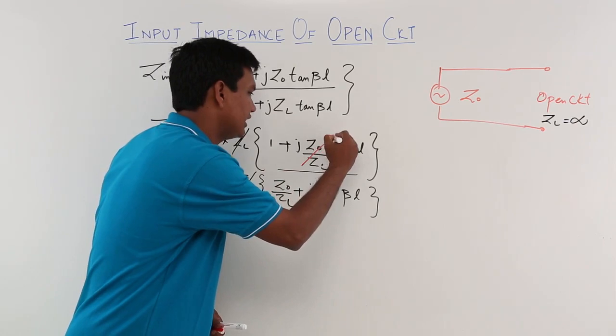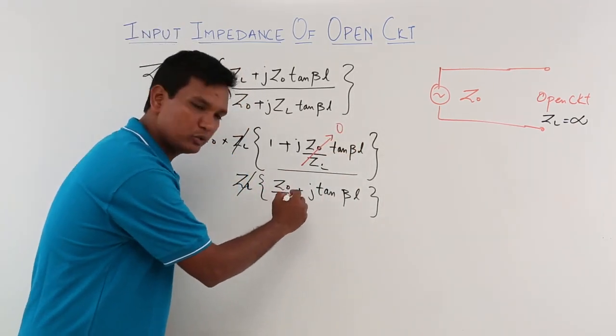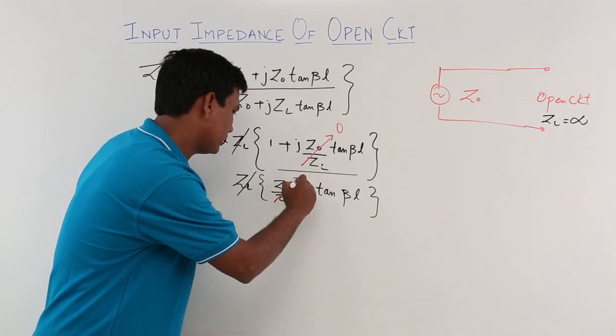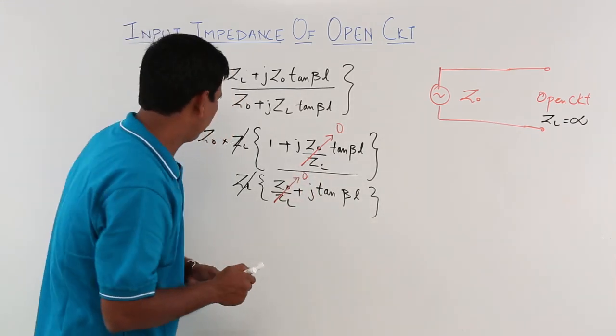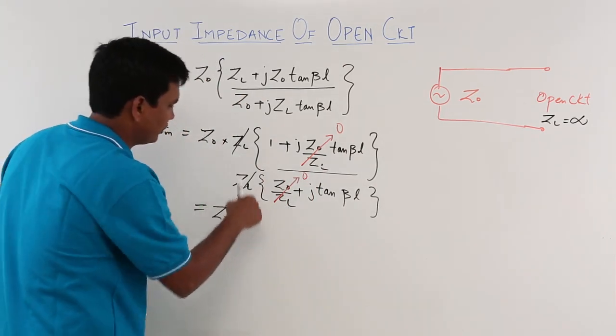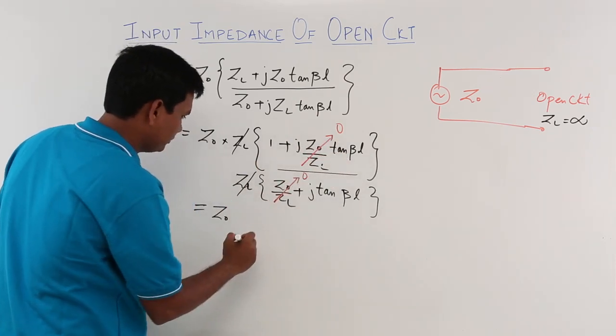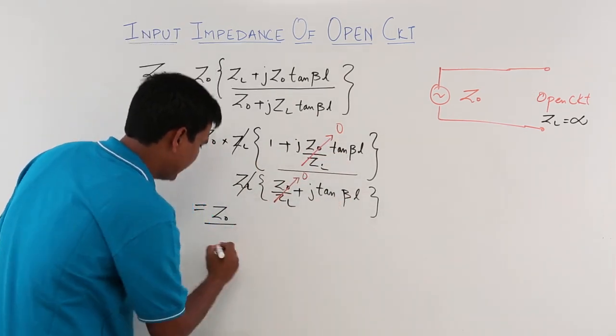This quantity will die out to zero. What about this quantity? This quantity will again die out to zero. So what we are left with? We are left with Z naught. This quantity gets cancelled.